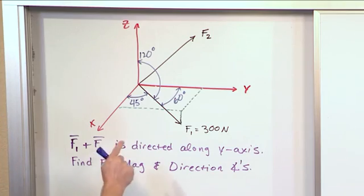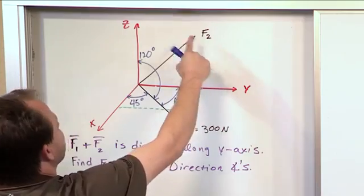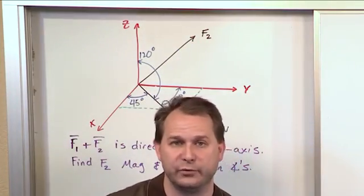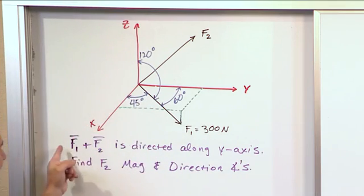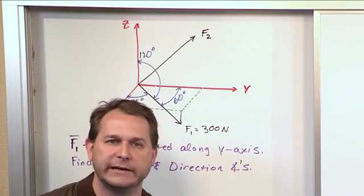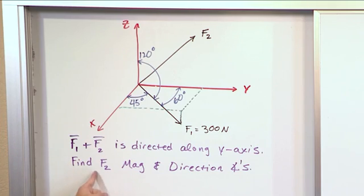All right, so what we've learned is that we know everything about F1. F2 is off here pointed somewhere as a placeholder. We don't know anything about F2. Actually, we're trying to solve for what F2 is. But what we do know is that F1 plus F2, whatever that resultant is, is directed along the y-axis only, only along the y-axis. And so we're trying to find F2 magnitude and direction.